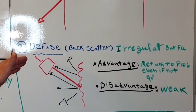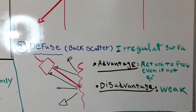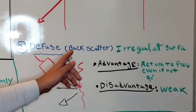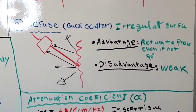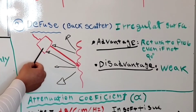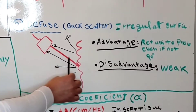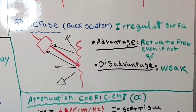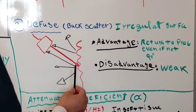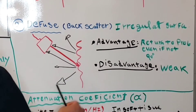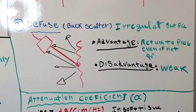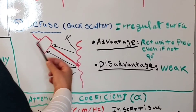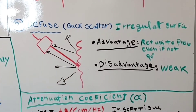The second type of reflector is the diffuse or backscatter reflector. The backscatter reflector occurs when the surface is irregular or not smooth. An advantage is that the sound beam will return to the transducer even if the transducer is not perpendicular to the reflector. The disadvantage is that the reflection is very weak, because some of the reflected energy travels away from the transducer.